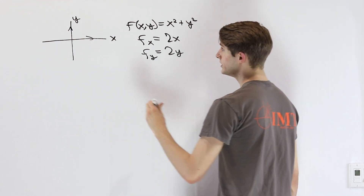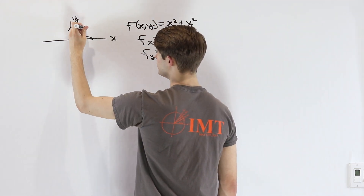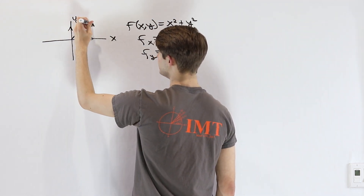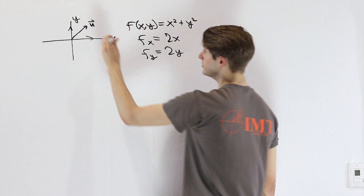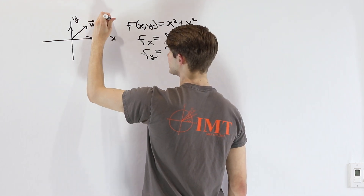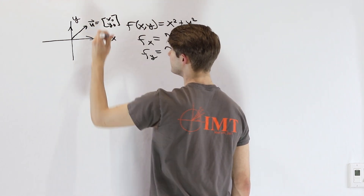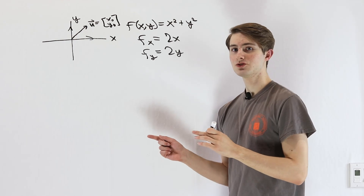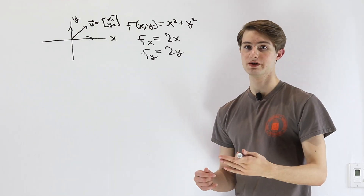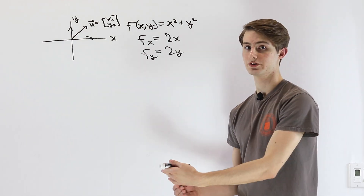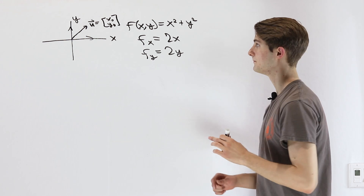The question is: what if we wanted to move in the direction of some other unit vector u, with coordinates x0 and y0? In that case, we're looking at what's called a directional derivative — a derivative in a particular direction in our xy plane.